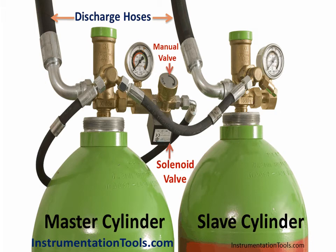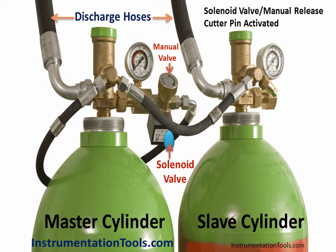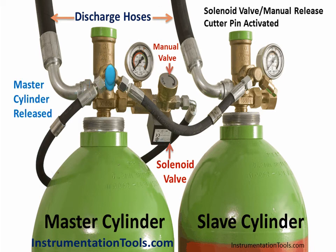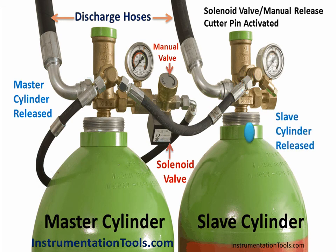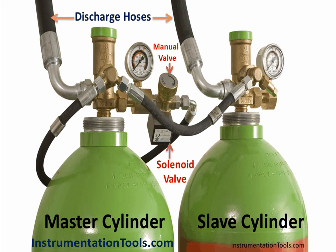Now the slave cylinder gas may have two paths, though the animation shows only one path. One is the discharge line going to the control room, and the second can be used to activate the next slave cylinder, and this cycle repeats. Generally we connect many cylinders in series as shown in the picture. We can use more than one master in case there are many cylinders in series, to speed up the operation.